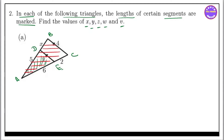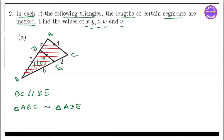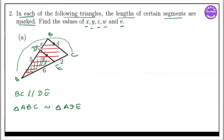So this is BC parallel DE. So let's go to the triangle. The triangle is triangle ABC. So this is the triangle ADE. So if you want to get angle ACB, you can calculate it. It's the triangle ADE.